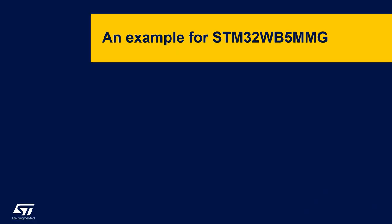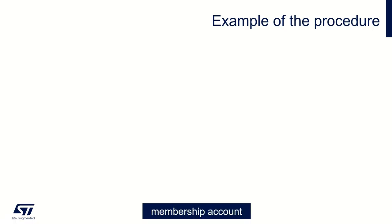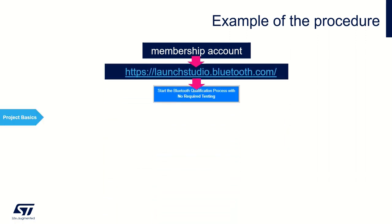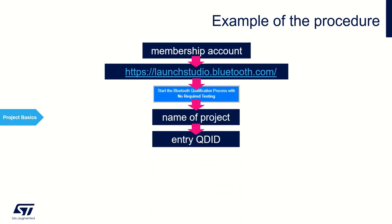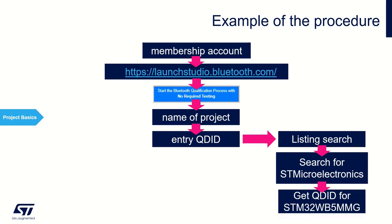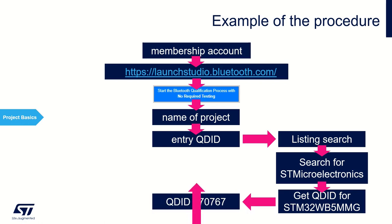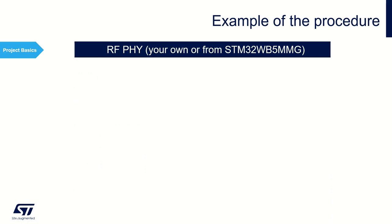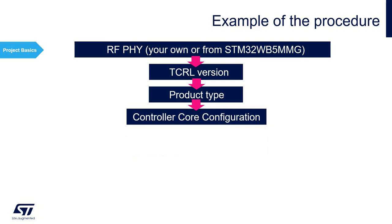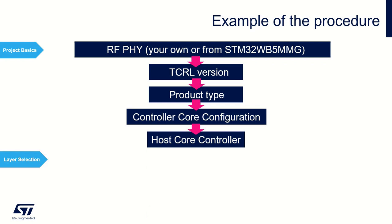Here is a short example for the STM32WB5MMG. Get your membership account first, then go to launchstudio.bluetooth.com and hit the button Start the Bluetooth Qualification Process. Enter the name of the project and QDID by clicking on Listing Search. Enter ST Microelectronics in the search bar and find the STM32WB5MMG in the list. You should get QDID 170767. Enter this in the required field. Then select the RFI, TCRL version, product type, controller core configuration (e.g., LE controller), and host core configuration (e.g., LE host).